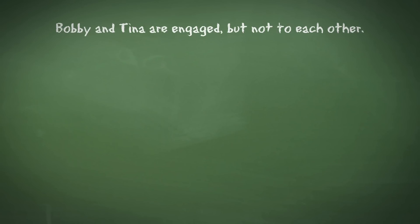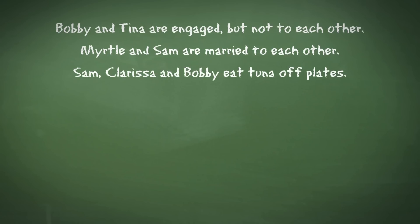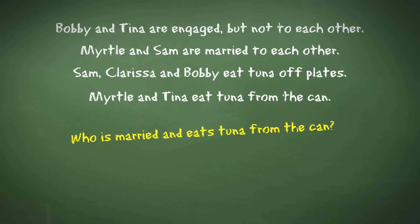Bobby and Tina are engaged but not to each other. Myrtle and Sam are married to each other. Sam, Clarissa and Bobby eat tuna off plates. Myrtle and Tina eat tuna from the can. And then we are asked who is married and eats tuna from the can.